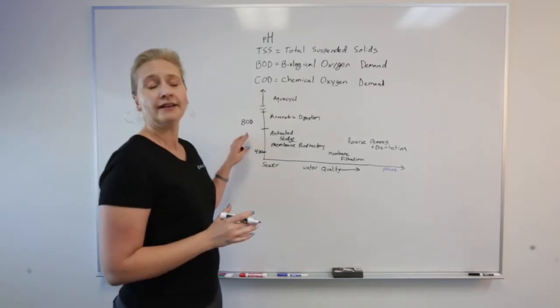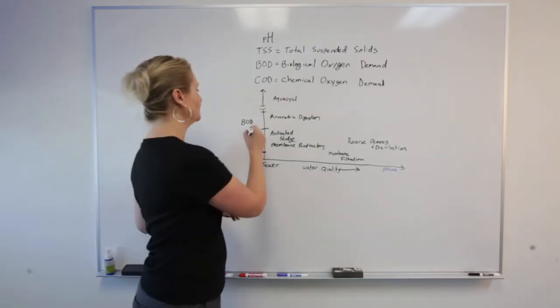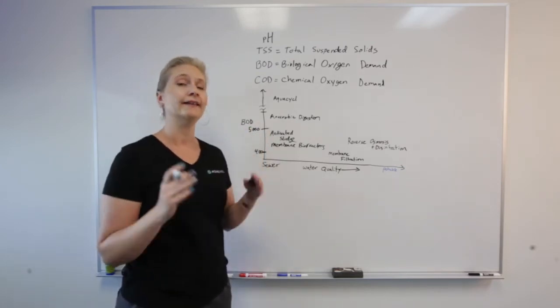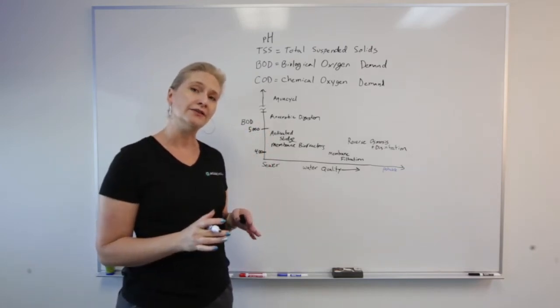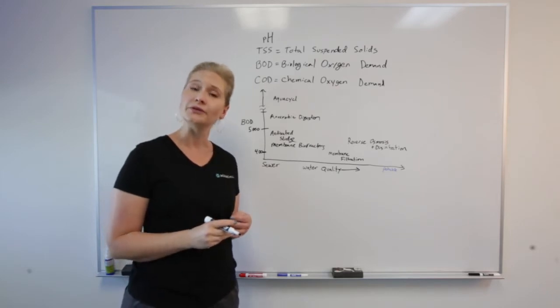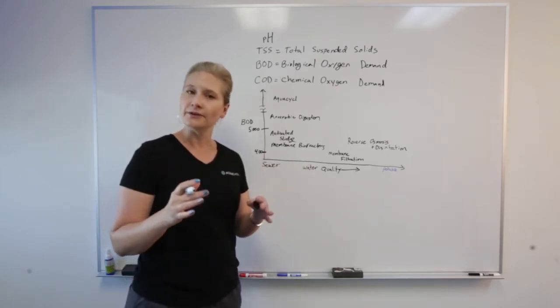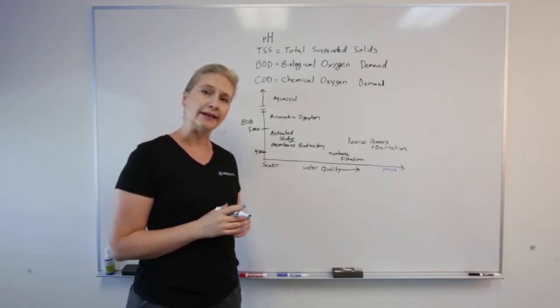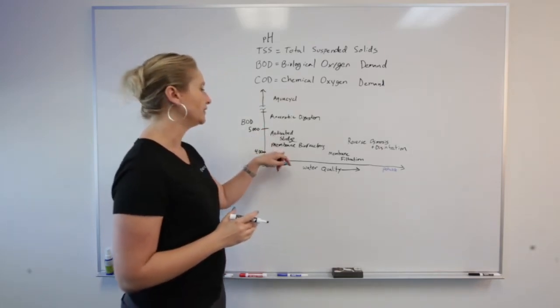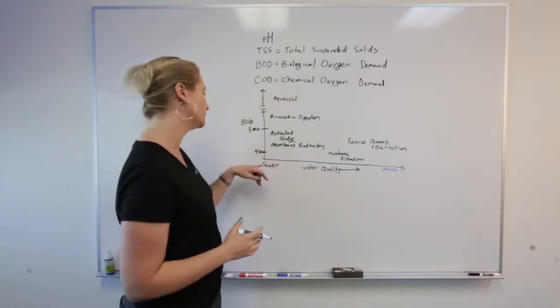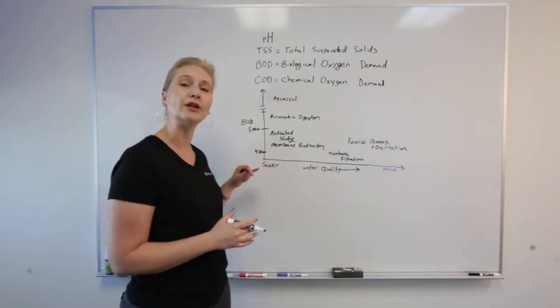But at a higher concentration, like 5,000 parts per million, now that becomes a challenge for the city. So you may have to consider doing some sort of treatment on site. You may have to haul things away. There's a couple different options. But if you want to do treatment on site, you can consider an aeration strategy, especially if you want to get down to a lower BOD level, maybe even lower than 400.